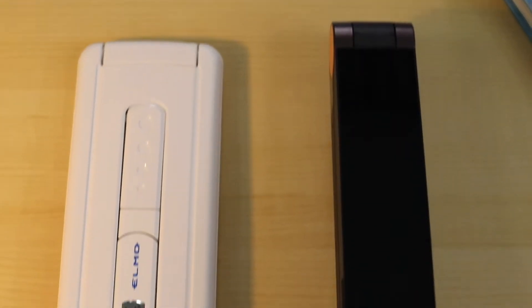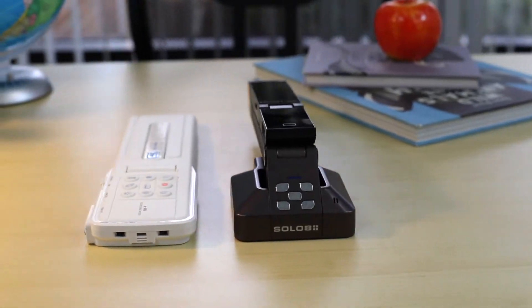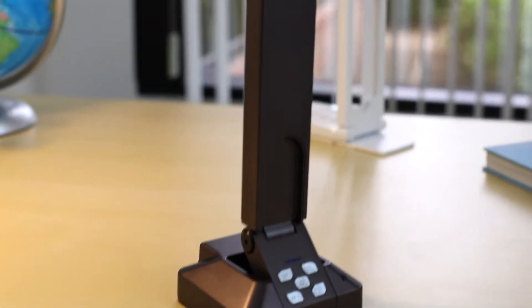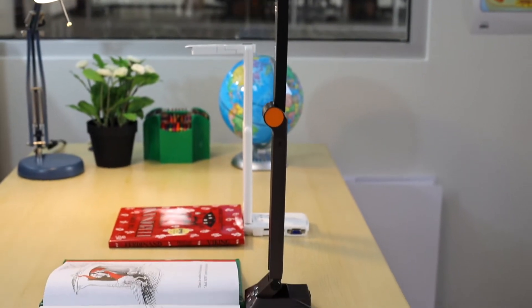Let's start by looking at the physical design. Both cameras can be folded down quite compactly, with the MXP folding down to almost pocket size. On the other side, the Hovercam Solo 8 Plus is slightly more robust with its zinc alloy frame and has a big advantage in field of view, allowing you to capture a full A3 size area like a double-sided textbook.